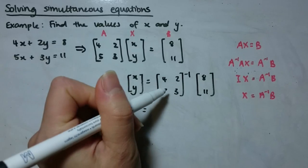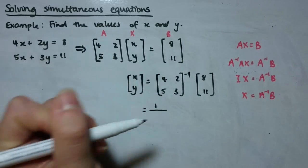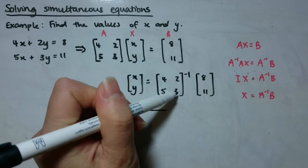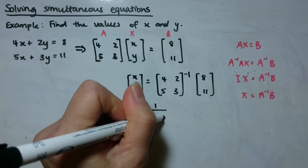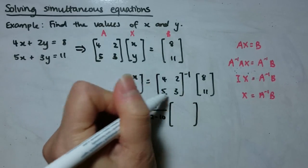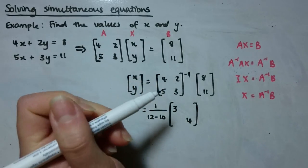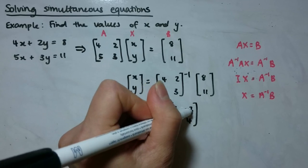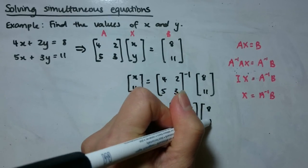So remember to find the inverse of a 2 by 2 matrix, you need to do 1 over the determinant. The determinant here is 4 times 3 is 12, take away 5 times 2 is 10. And then with this matrix in here, we've got to do some things with the elements. So we're switching 4 and 3 on the main diagonal, and we are changing the sign of the elements that are not on the main diagonal.